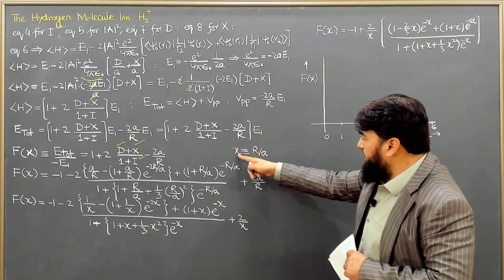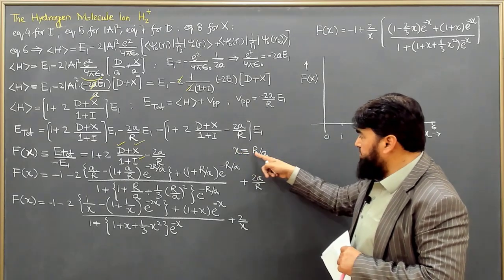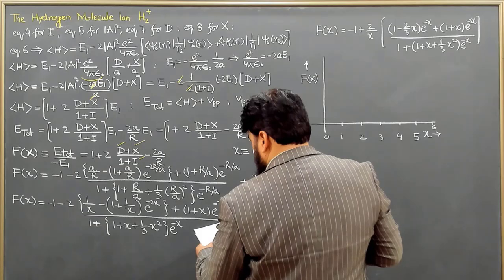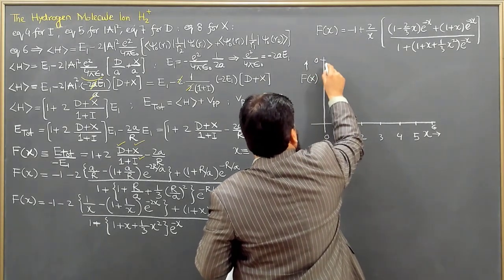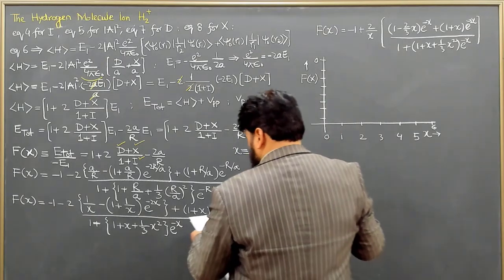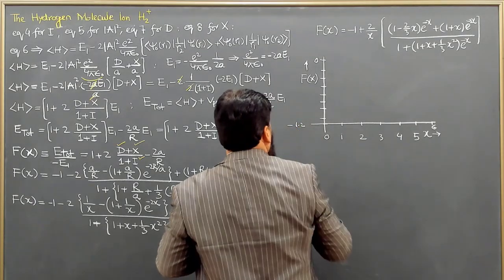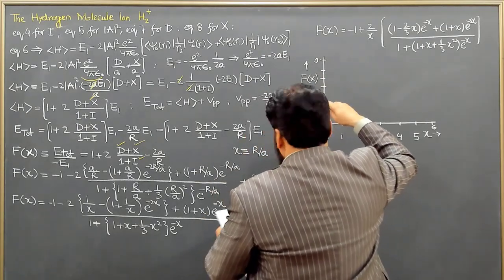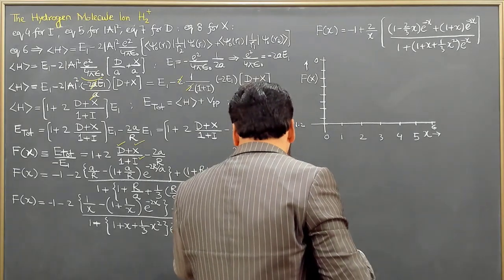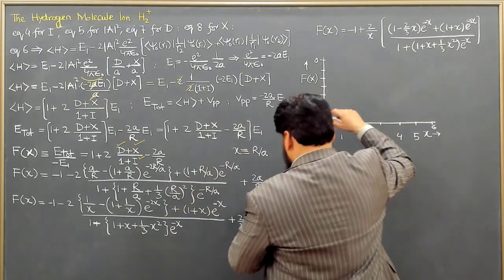So when x is equal to 1, then it means that r is equal to 2 Bohr radius, and so on. And this one, the f of x, the value starts from 0 here, and then it gradually decreases, and this value is minus 1.2. So it starts from 0, and then 0.2, and steps of 0.2. I have the plots I have reproduced in the notes, and here we have 0.6 and so on.